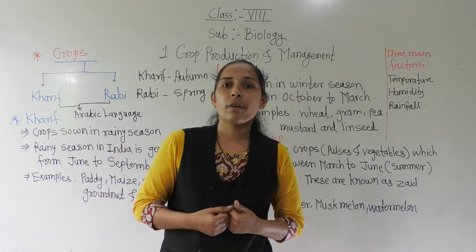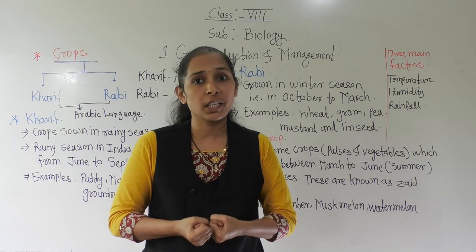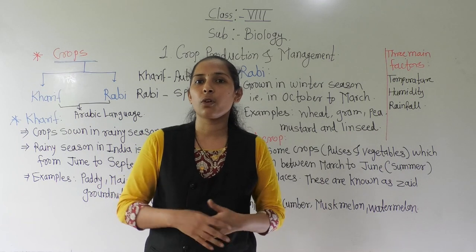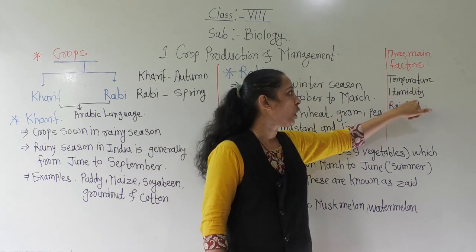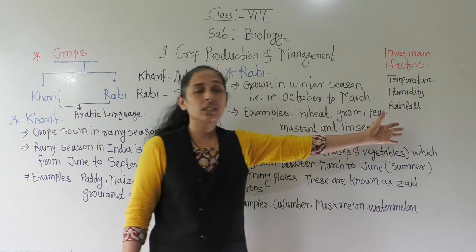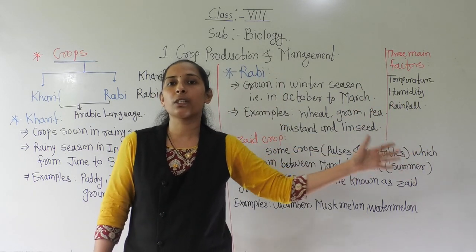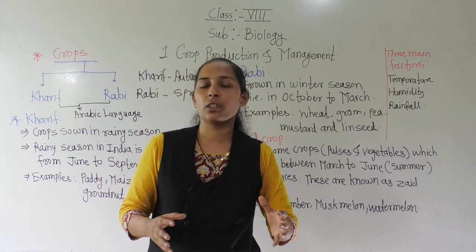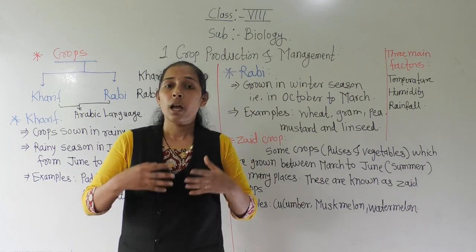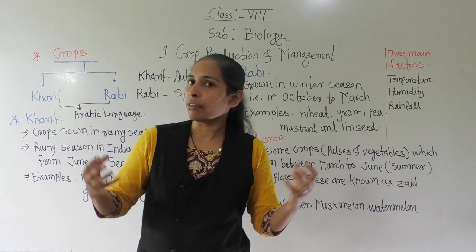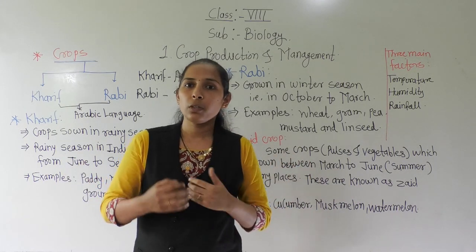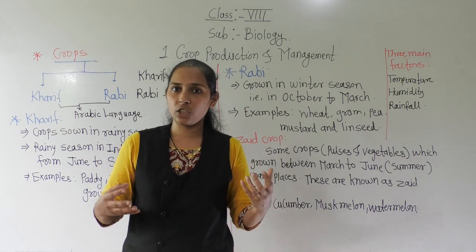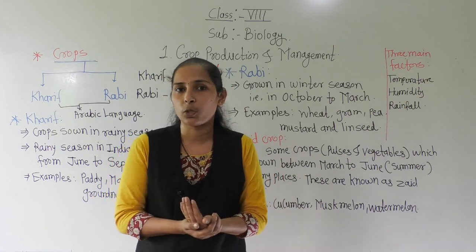Basically, crops require certain types of climatic conditions. The main things which are necessary for crops are: one, temperature; two, humidity; and three, rainfall. These are the three main factors which contribute to the different types of crops. Because of these certain sets of climatic conditions, we grow different types of crops as per different regions and seasons.